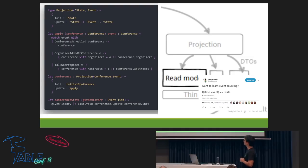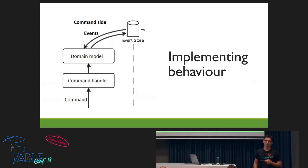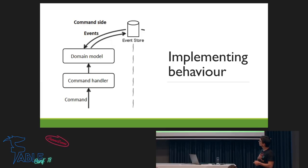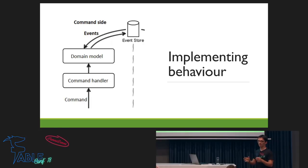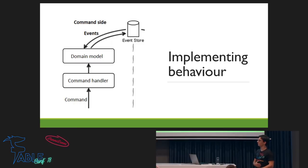Now that we have this, we need to implement behavior as well, because a business application without behavior isn't something you can write a check for. We have a command coming in, some kind of command handler that routes commands to domain logic, and in the end we get out events. These events are stored in an event store. An event store is just a simple append-only structure — it has two functions: get all the events, and append a list of events. We never need to touch it again because the event store is immutable. We do not change history.